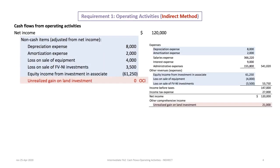The first thing we do is start with net income. Here is an excerpt of the income statement, and the net income is $120,000 — that becomes the starting place, and this is only for the indirect method. Then we look at our income statement for any non-cash items — adjustments included in net income that are not cash related. This blue area corresponds to those items: depreciation expense and amortization expense of $8,000 and $2,000, so we add those back.